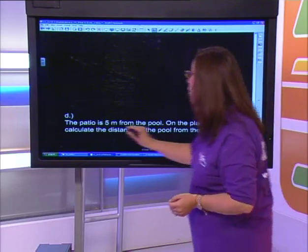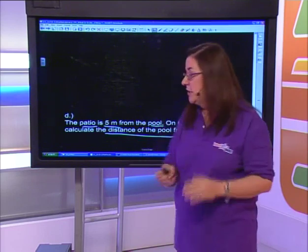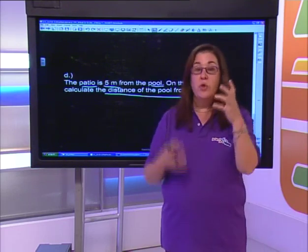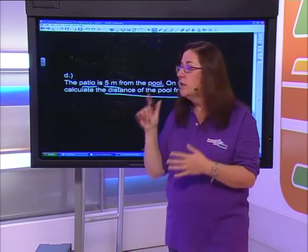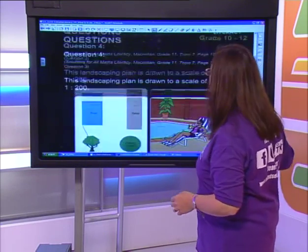Also: the patio is 5 meters from the pool - calculate the distance on the plan. Just remember, whenever doing these calculations, keep your real life value and your plan value very separate, and you'll know whether to multiply or divide. Do those on your own.